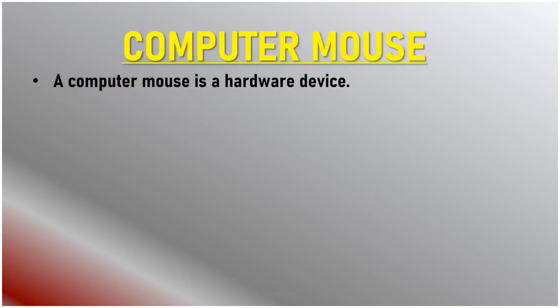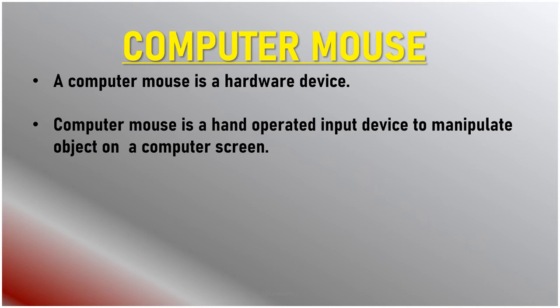A computer mouse is a hardware device. Computer mouse is a hand operated input device to manipulate object on a computer screen. Sometimes mouse is called pointer.